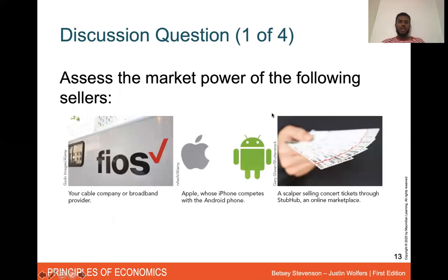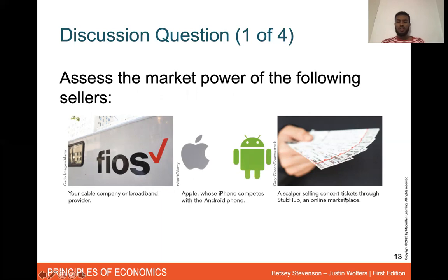Discussion question: Assess the market power of the following sellers. What market structure do you think each of these companies falls into — perfectly competitive, monopoly, oligopoly, or monopolistic competition? The first is a cable company or broadband provider. The second is Apple, whose phones compete with Android. The third is a scalper selling concert tickets through an online marketplace. Think about where each of these falls, and come to office hours on Friday at 11:30 if you want to talk about it.